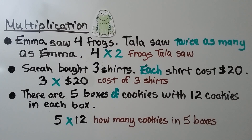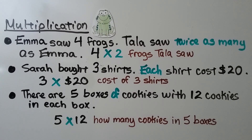For multiplication: Emma saw 4 frogs. Tala saw twice as many as Emma. That would be 4 times 2, because 'twice as many' tells us to multiply by 2. That's the number of frogs Tala saw.